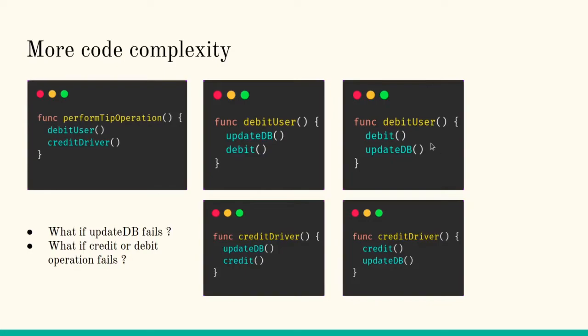In the second case, when we put the debit first and then the update DB second, what happens? Let's suppose the debit is successful but update DB has failed. At that point, the inconsistencies come up again. And the similar scenario goes with the credit thing—update DB is successful but credit has failed, again it leads to inconsistencies.